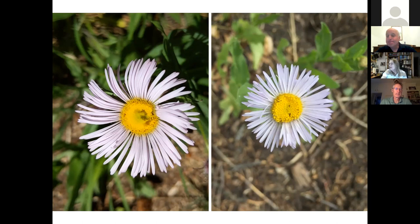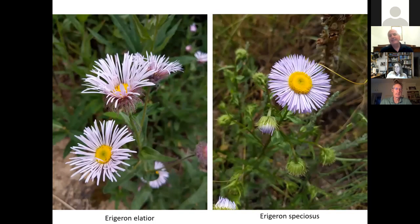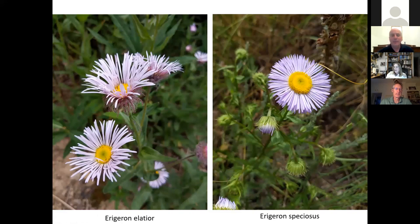Here are two different species — they're two different erigerons — but you can see how similar they look, and you can see how the model might have trouble telling them apart. But if you take the pictures showing the phyllaries, you can clearly see one has long hairy phyllaries and one has glabrous phyllaries. Now the species look very different, and the model will pick up on that and separate them. Including other characteristics in how you take the photo is going to help with success.